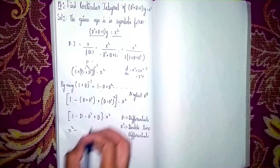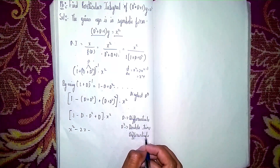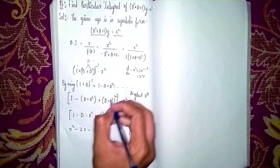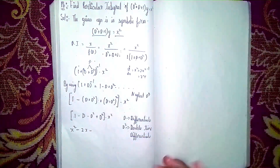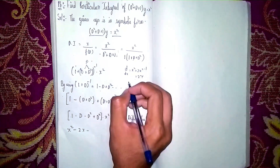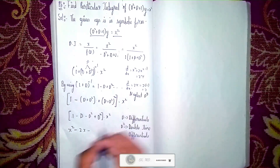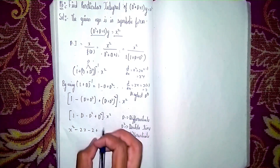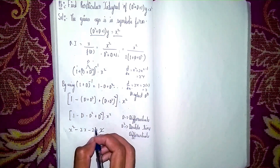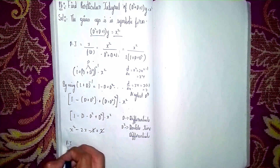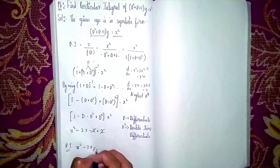Then minus D² of x², which means double differentiation: d/dx of 2x = 2. So minus 2. Then plus the d/dx of 2x is again 2, and the minus and plus cancel. Our particular integral is x² - 2x. This is our answer. Thanks for watching.